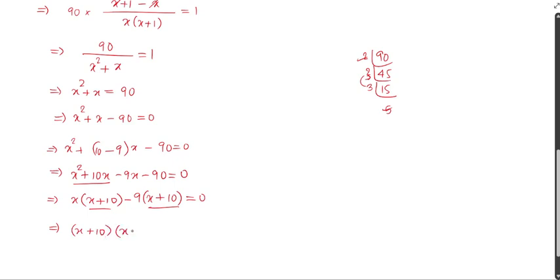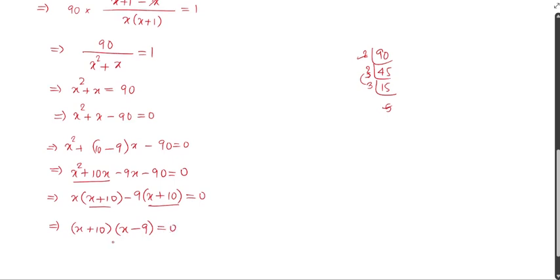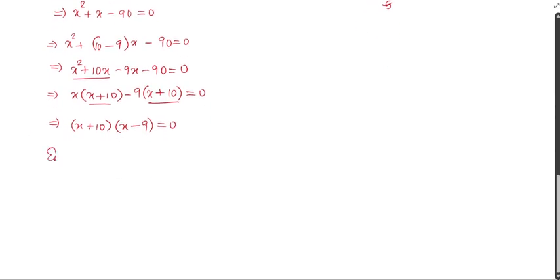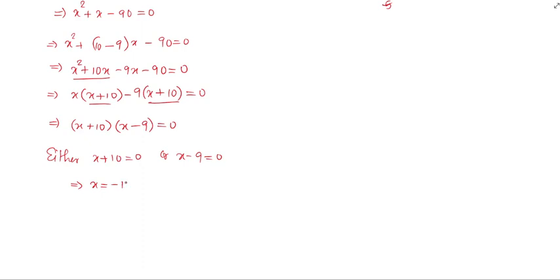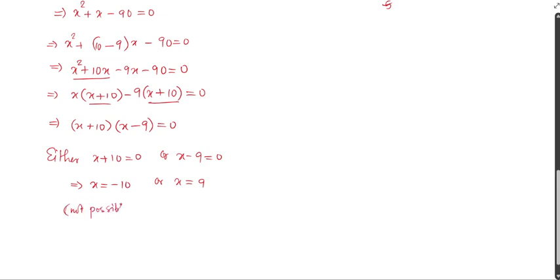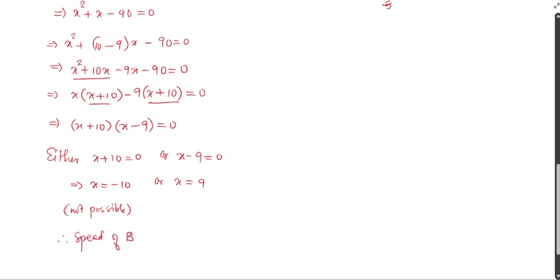So we get x minus 9 equals 0, giving x equals 9, or x plus 10 equals 0, giving x equals negative 10. Remember, x is the speed of B and speed cannot be negative. Therefore, speed of B equals x equals 9 meter per second.